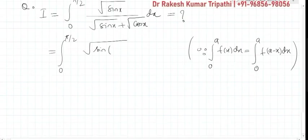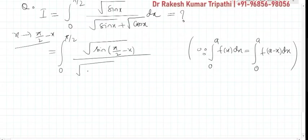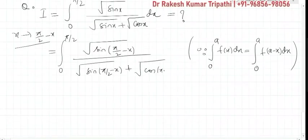So in our integral, a is π/2. So we shall replace this x by π/2 - x as per this property. So the integral will be 0 to π/2, √sin(π/2 - x) upon √sin(π/2 - x) + √cos(π/2 - x) dx.